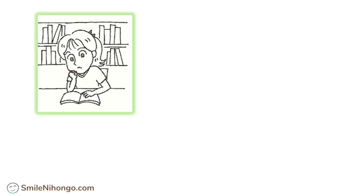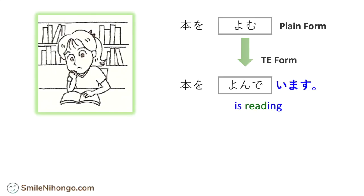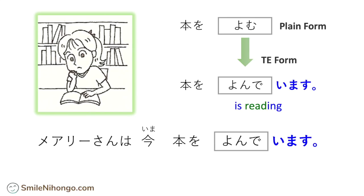So here's Mary-san — she's reading a book. To read a book is 本を読む in plain form, but to say she is reading a book right now, you have to use the te-form + います expression. So you change 本を読む into the te-form 本を読んで, and then add います after that. That's it: 本を読んでいます. This means 'she is reading a book.' As a complete sentence you can say: メアリーさんは今本を読んでいます — Mary-san is reading a book now.